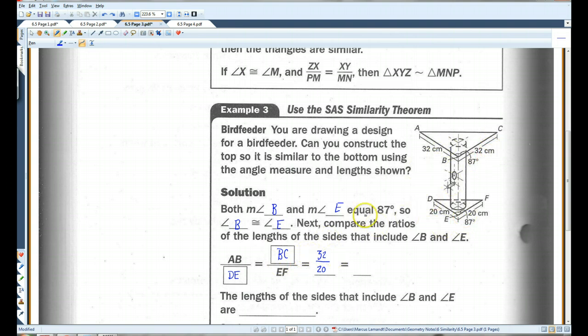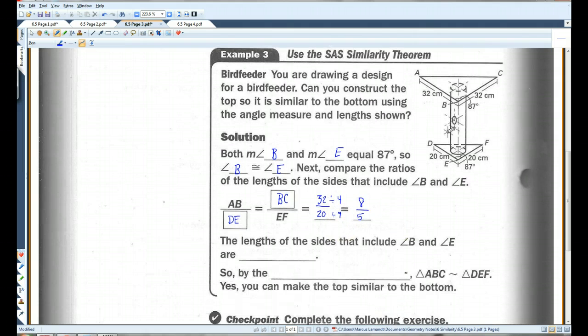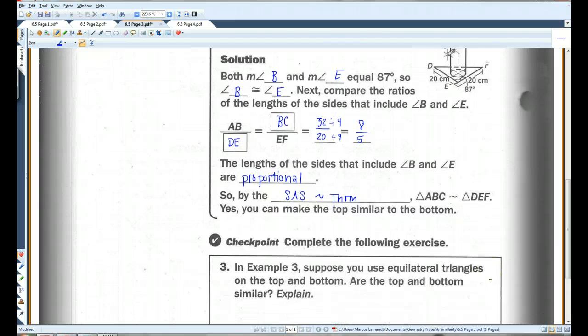32 over 20 simplifies to 8 over 5 if you divide top and bottom by 4. The lengths of the sides that include angle B and angle E are, in fact, proportional. So, by the SAS similarity theorem, the triangles are similar. So, you can make the top similar to the bottom.